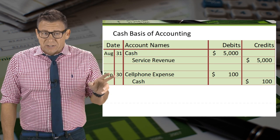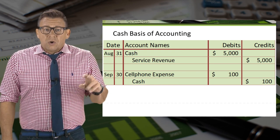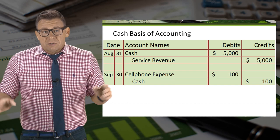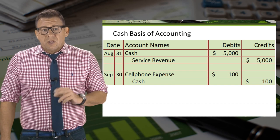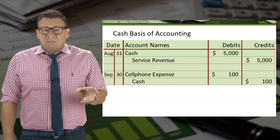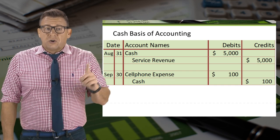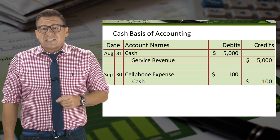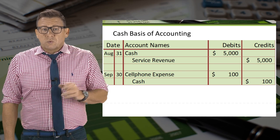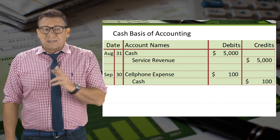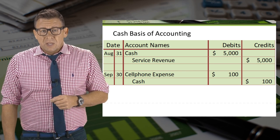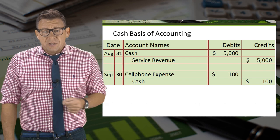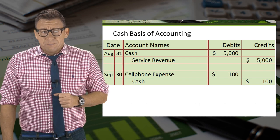Under the cash basis of accounting, revenues and expenses are all over the place. The revenue of $5,000 would be recorded in August, and the expense of $100 would be recorded in September. Basically, it would look like you did absolutely nothing during the month of July.